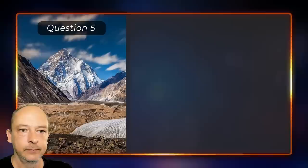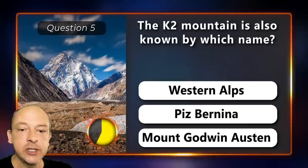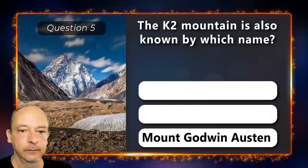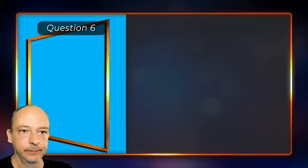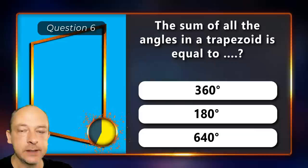The K2 mountain is also known by which name — Western Alps, Pisbenina, or Mount Godwin Austin? Mount Godwin Austin. The sum of all the angles in a trapezoid is equal to 360, 180, or 640 degrees?